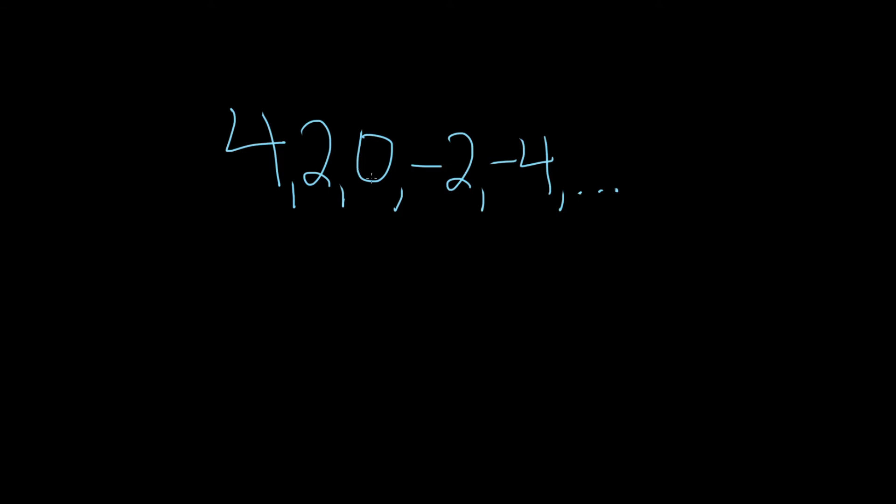So it looks like we're just adding negative 2 over and over again. We're looking for what's called the general term, or the nth term.